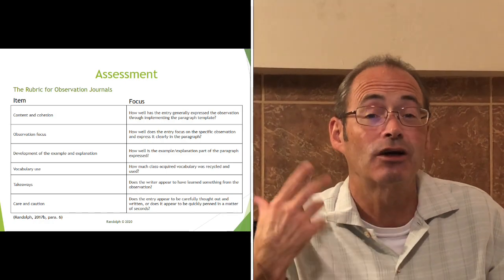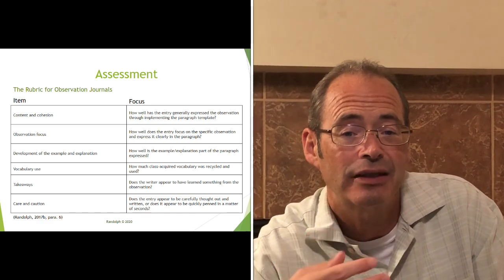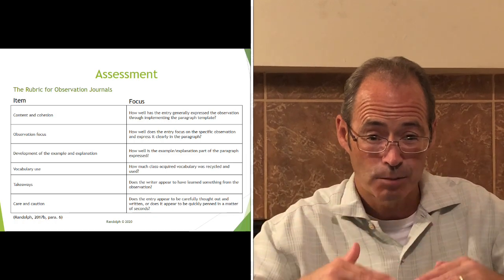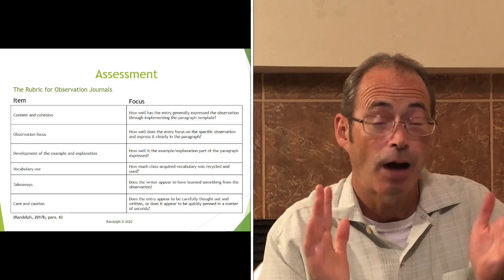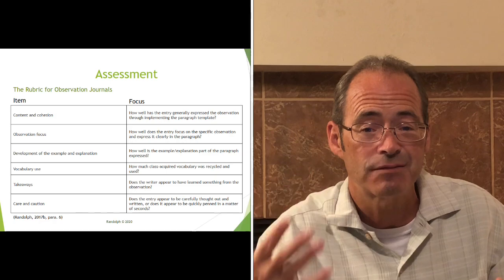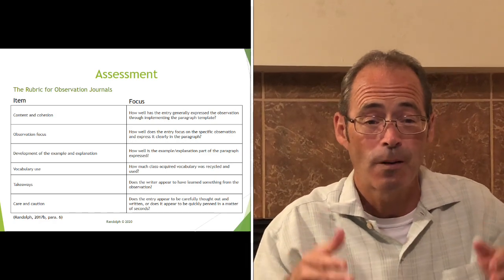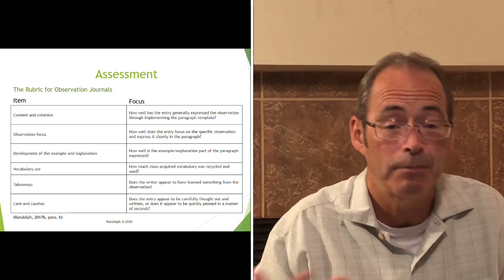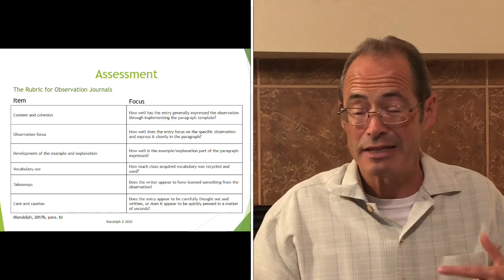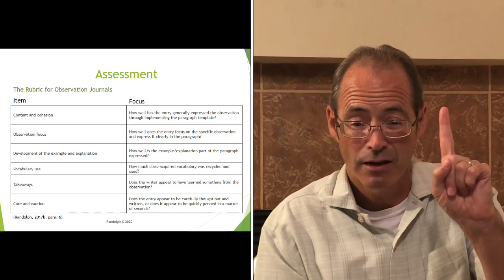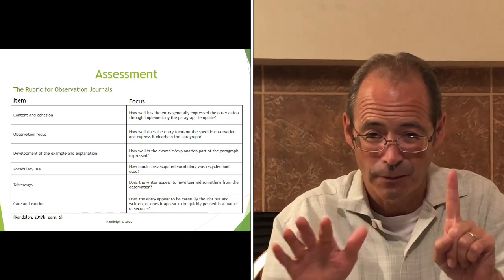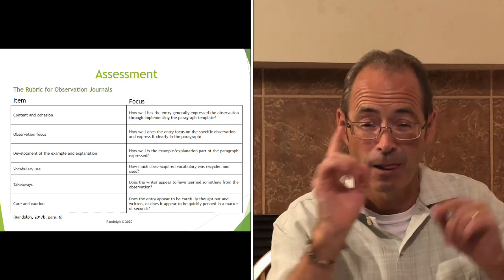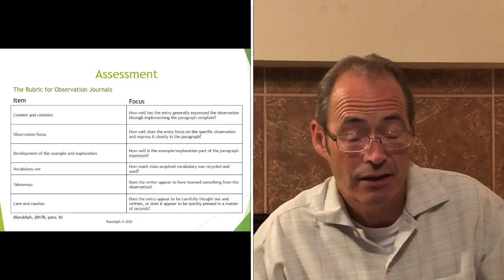The first assessment category is content and cohesion — how well has the entry generally expressed the observation through implementing the paragraph template? Have they hit all those points in the template? Number two is observation focus — how well does the entry focus on the specific observation and express it clearly? This is about being nice and tight, because one of the biggest things students struggle with is taking one point and going deep with it. A lot of times they want to hit one point and then do a bunch of superficial sub-points — they get stressed and don't know how to go deep. These observation journals really help students take one point and go very deep.